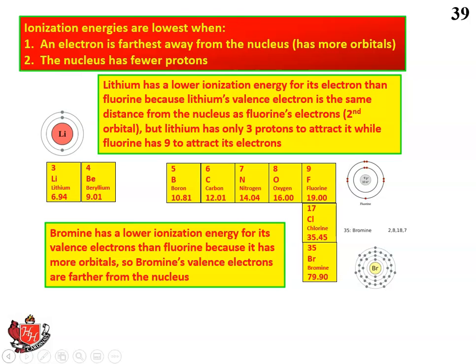Now what about up and down? Bromine has a lower ionization energy for its valence electrons than fluorine because it has more orbitals — that's a little easier to understand. Bromine's valence electrons are farther from the nucleus, and they have a lot of core electrons — those electrons inside — blocking the outside electrons from feeling the pull of the protons. Even though bromine has more protons, they're really shielded so that the valence electrons don't feel them very well. Whereas in fluorine, there's very little shielding of the valence electrons from the nucleus, and therefore bromine has a lower ionization energy.